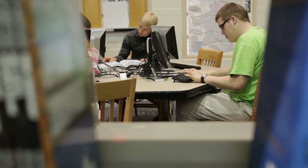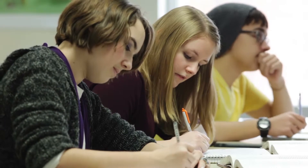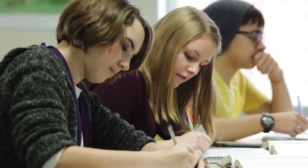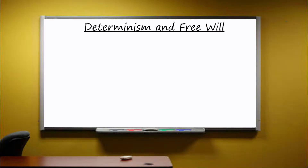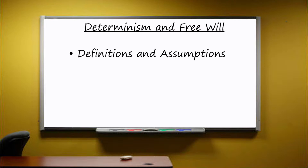So how would you go about revising this to give a good exam answer? Well, first you need to show you've got a really good understanding of what we mean by free will and determinism. Simple definitions will get you some marks, but unpicking the key assumptions underlying each idea and linking them to approaches in psychology will get you more.